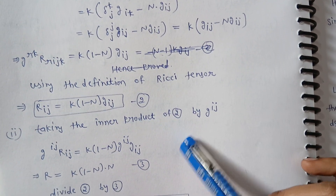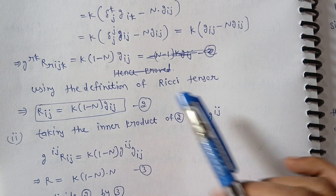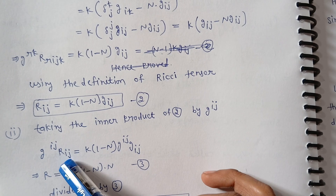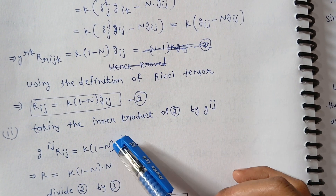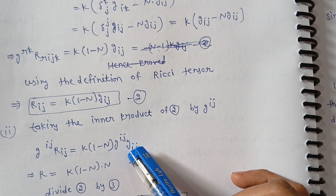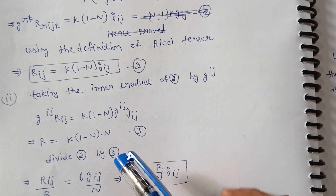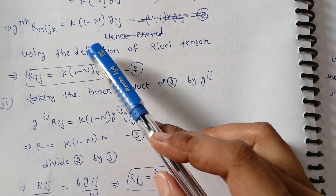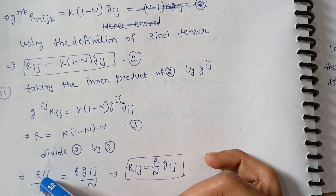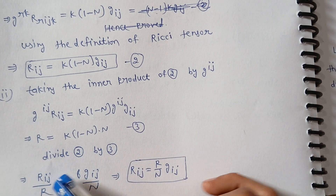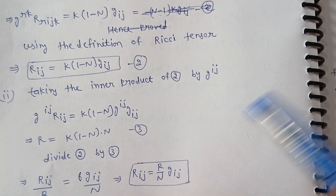Using the definition of the Ricci tensor, this term equals R_ij with the same indices, giving us the first part. For the second part, we multiply G^ij by R_ij, and since G^ij and G_ij are the same, we get R equals K times (1 minus n) times N. Dividing the second result by the third, K times (1 minus n) cancels and we obtain R_ij equals (R/n) g_ij, confirming the Einstein space condition.